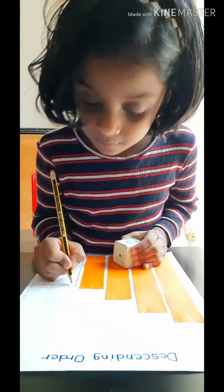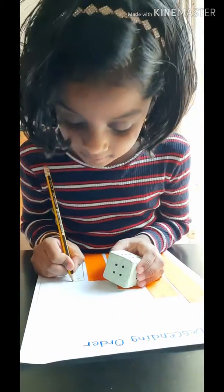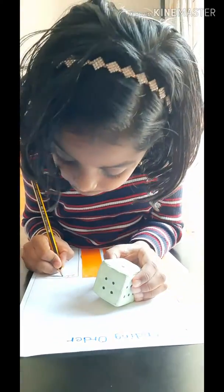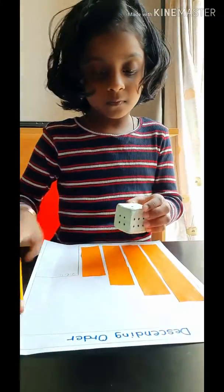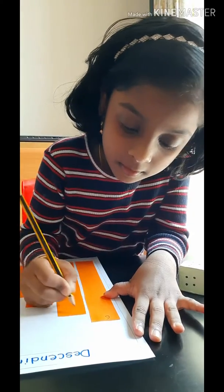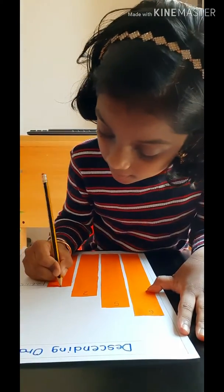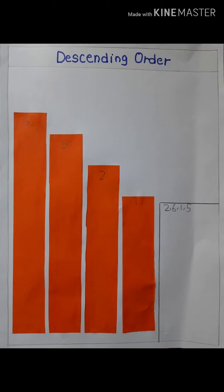The numbers drawn are: 2, 6, 6, 1, 5. Arrange the numbers in descending order: 6, 6, 5, 2. Bye-bye.